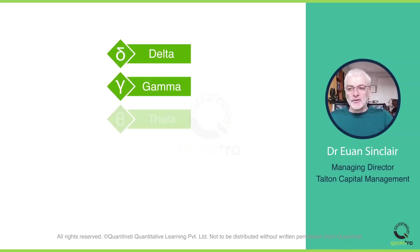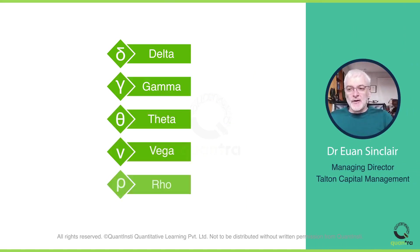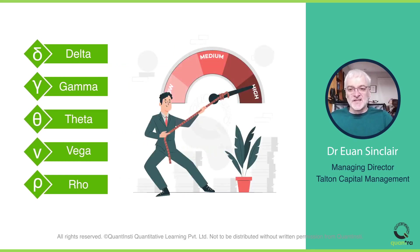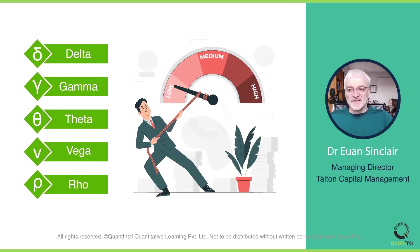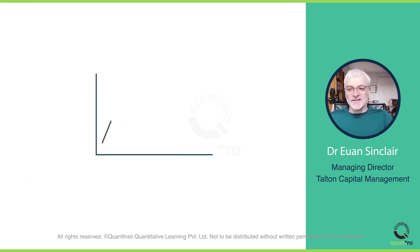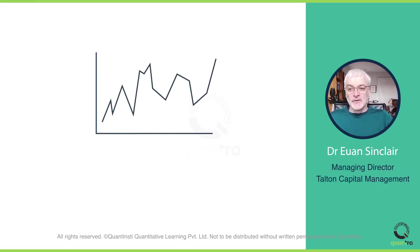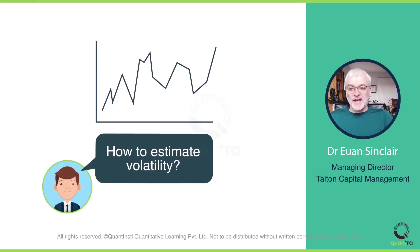Then you're going to learn about first and second order Greeks. This helps you quantify the sensitivity of option prices to various risk factors. Options are directly impacted by volatility, so it's essential that you learn how to estimate volatility.